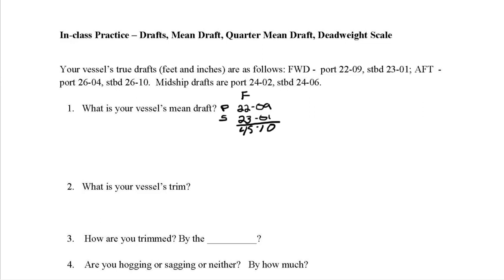To get the average of these two drafts, I need half of 45'10". Half of 45 is a bit tricky, so I'll borrow one foot — converting it to 12 inches — making it 44 feet and 22 inches. Half of 44 is 22, and half of 22 inches is 11 inches. So my average forward draft is 22'11".